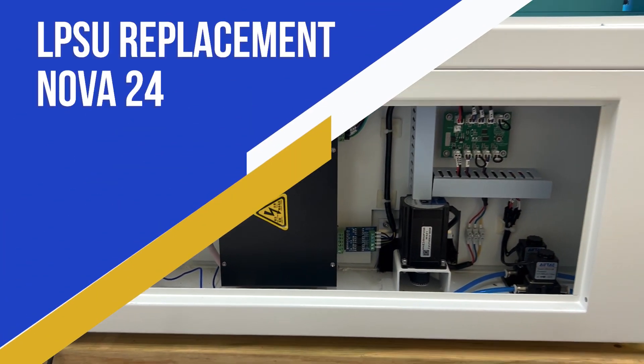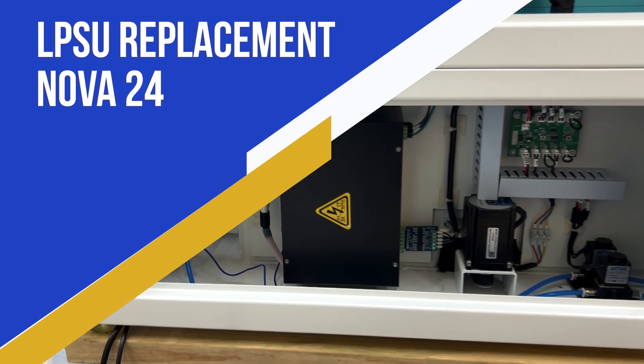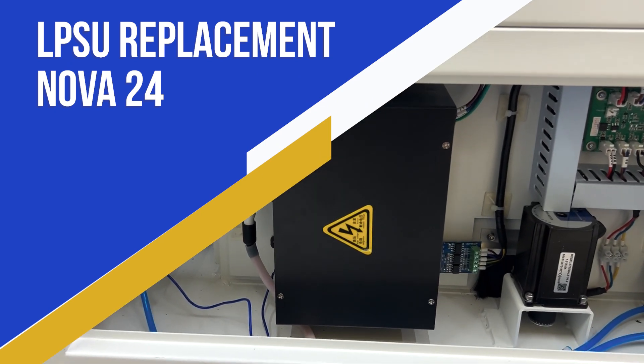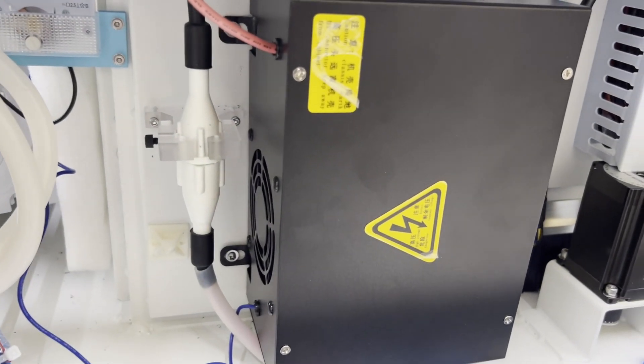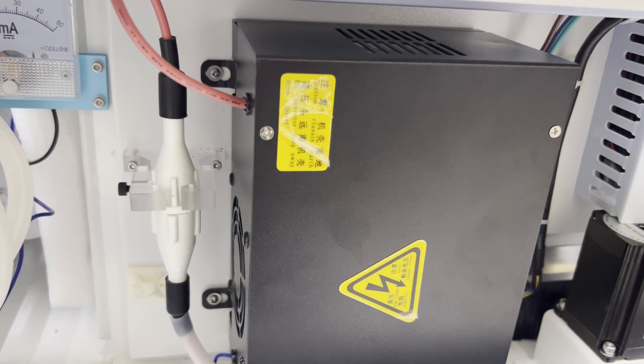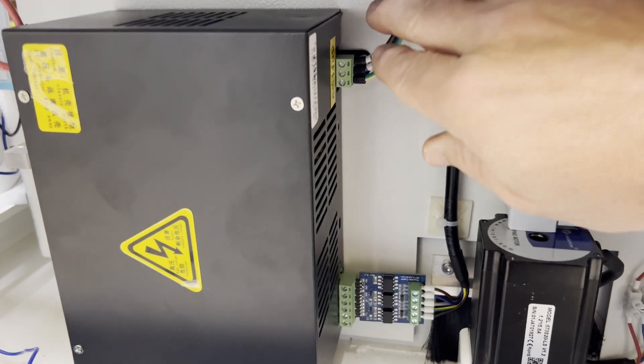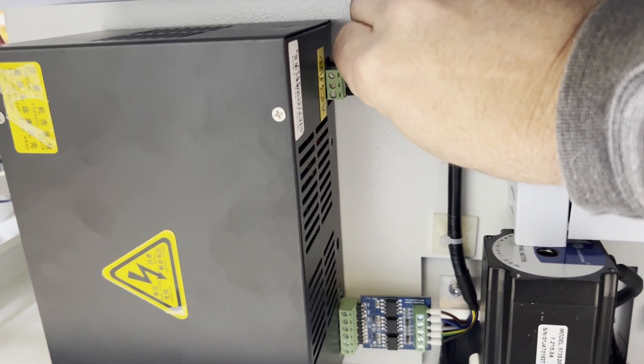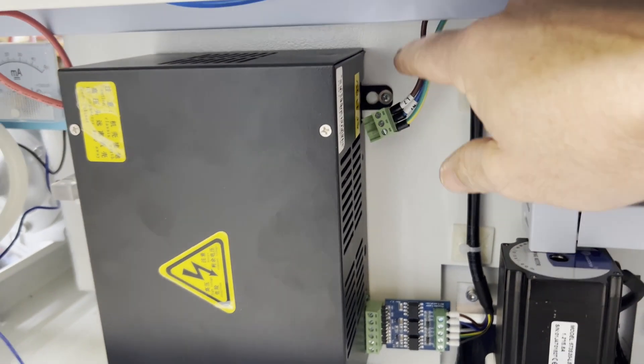Okay, so you have a failed LPSU and we need to pull the original one out so we can get ready to put a new one in. Now there are three screws holding the LPSU on, so you can see two there and then there's one behind the main AC plug right there.